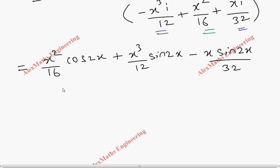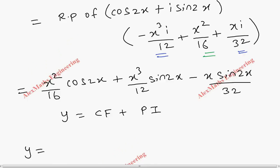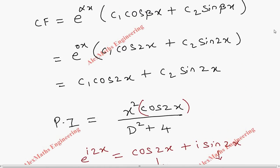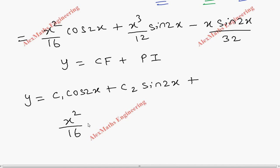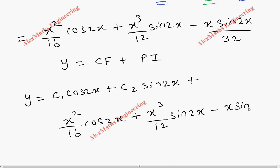Combining the complementary function and particular integral, the complete solution is: y = c1·cos2x + c2·sin2x + (x²/16)·cos2x + (x³/12)·sin2x - (x/32)·sin2x.